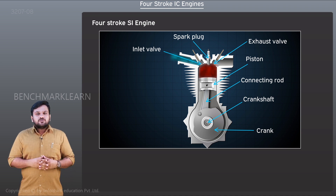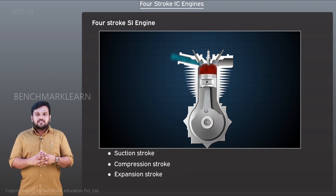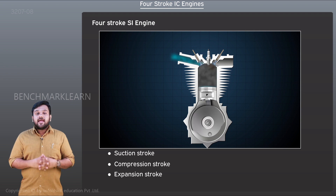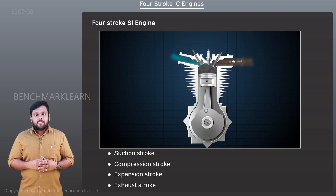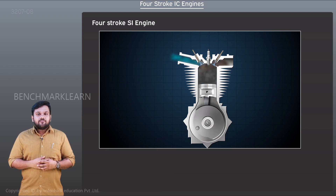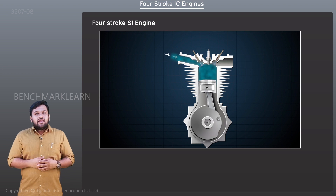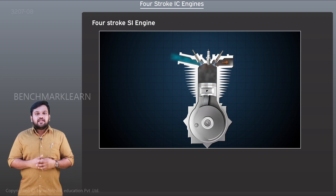There are four strokes to complete one power cycle: the suction stroke, compression stroke, expansion stroke, and the exhaust stroke. A pressure-volume diagram of the Otto cycle will help us identify each stroke separately. One cycle is completed in four strokes of the piston and two rotations of the crank.